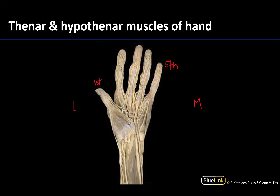The thenar compartment of the hand, or the thenar muscles, are the intrinsic muscles that have both their proximal and distal attachments within the hand. These are the thenar muscles associated with the first digit. There are three separate muscles in this region and they will flex, abduct the first digit, as well as play a role in terms of opposition.